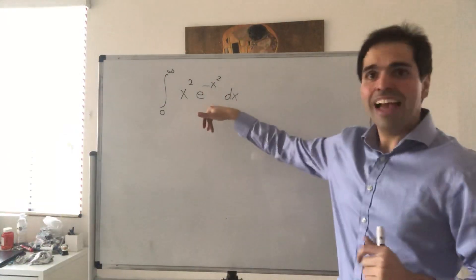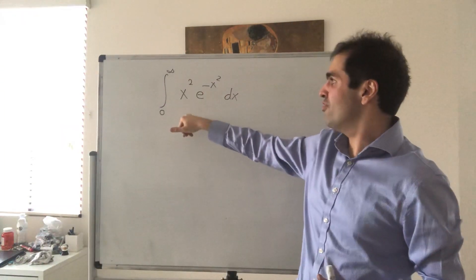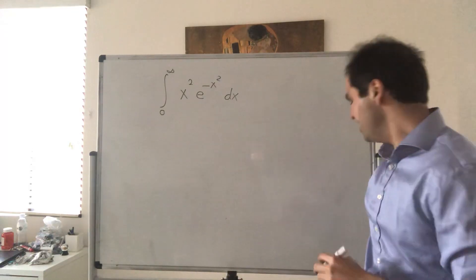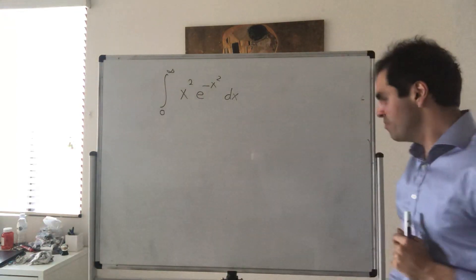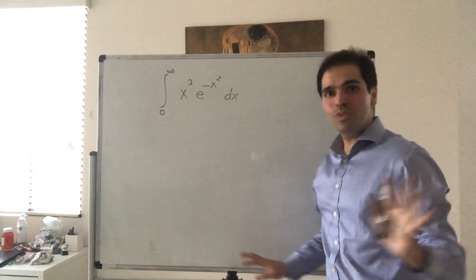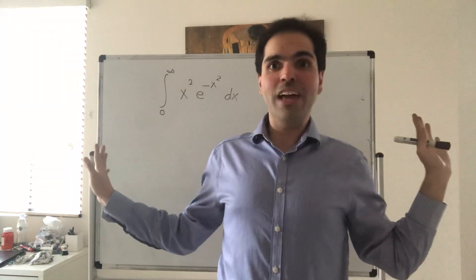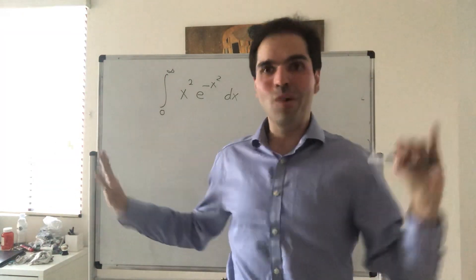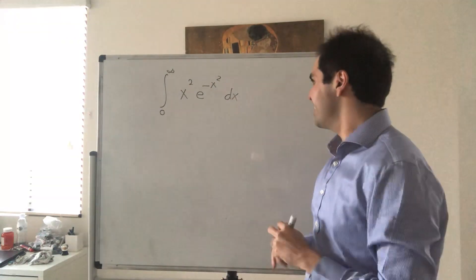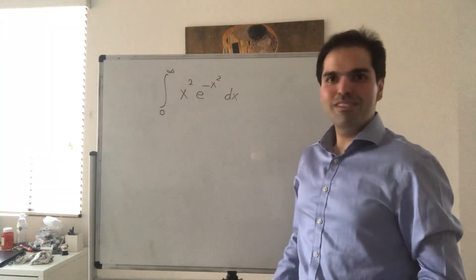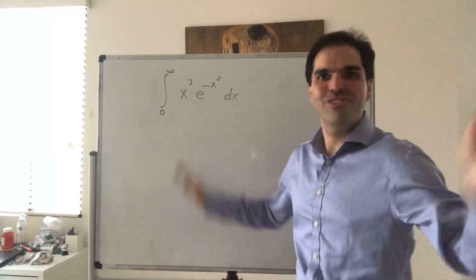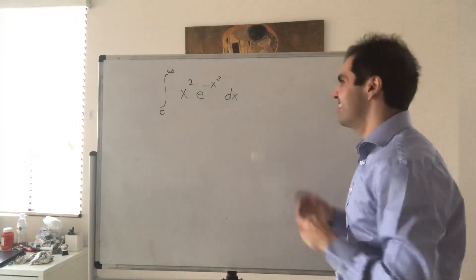All right, thanks for watching. Today I would like to solve for the integral x squared e to the minus x squared from zero to infinity using basically no calculus, so no algebra whatsoever, just some very clever thinking. I'm sure this has been discovered before, but I just stumbled upon it when I taught multivariable calculus.